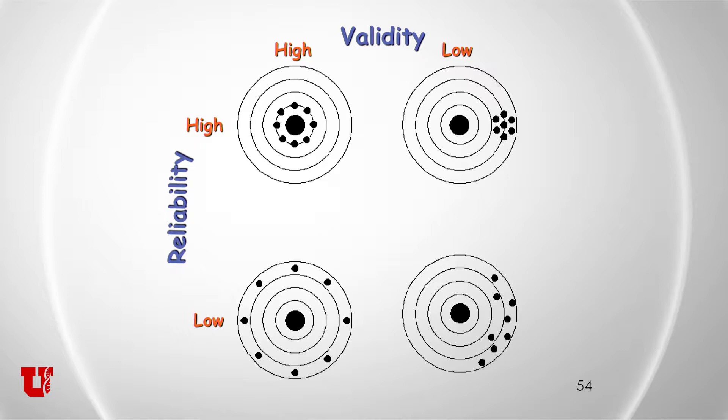On the lower left, we have shots that do average around the bullseye — if you averaged out all those measurements, you would hit the truth. So that is high validity. But it's not very reliable because individual uses of that tool give a lot more variation than you'd like. And to be completely avoided is the lower right: a measurement that is neither valid — it does not average out to the bullseye — nor reliable, with repeated uses giving a variety of different results.